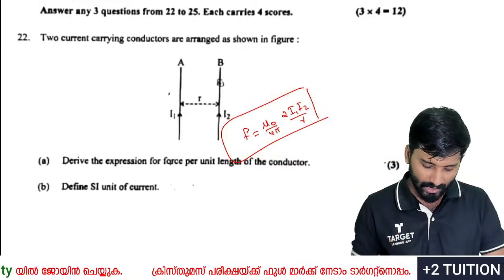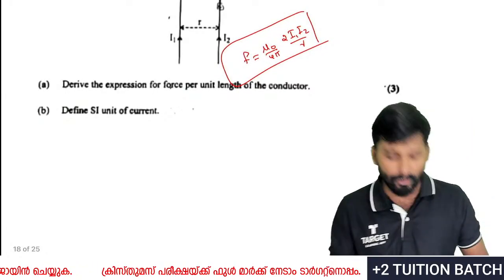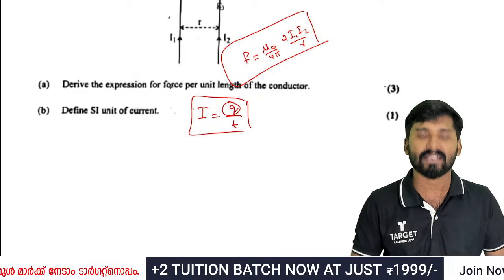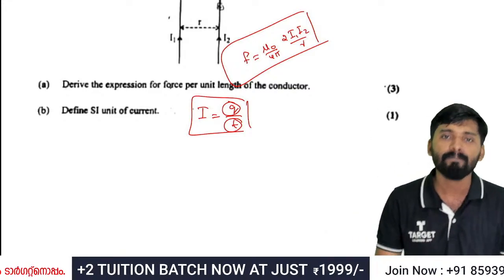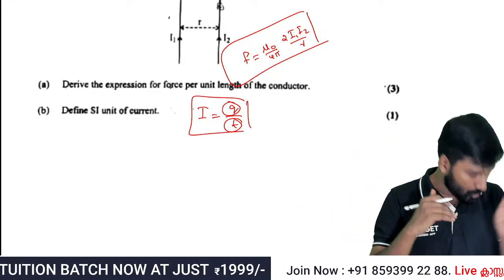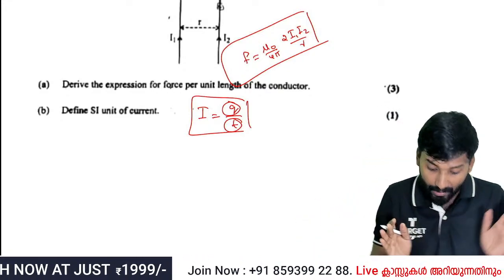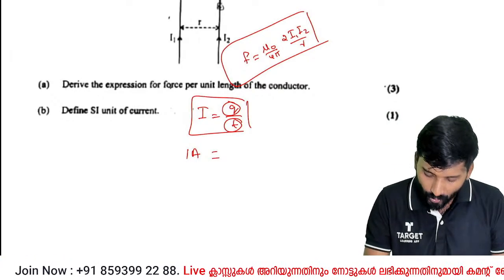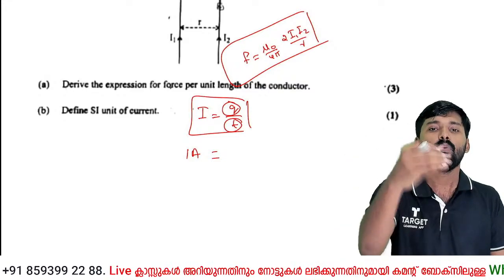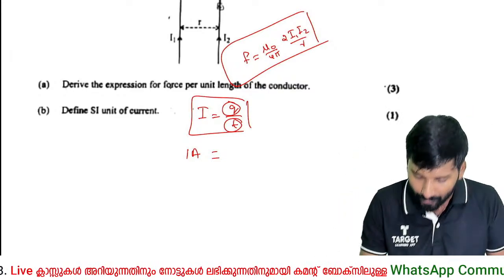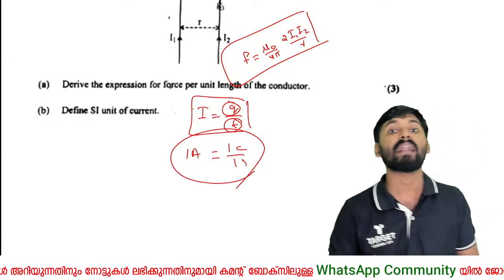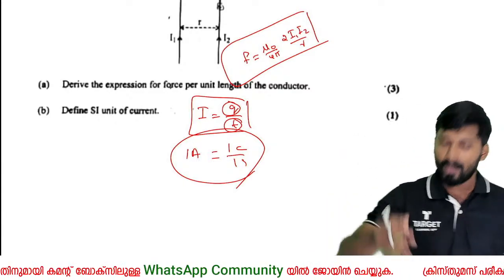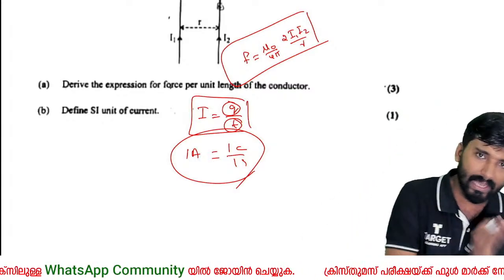Define the SI unit of current. Current I is equal to Q divided by T. One ampere is defined as the amount of charge — one coulomb — flowing through a conductor in one second. So one ampere equals one coulomb per second.